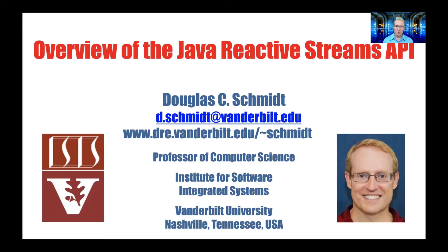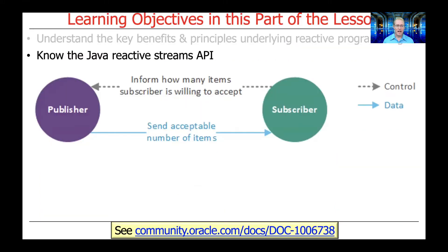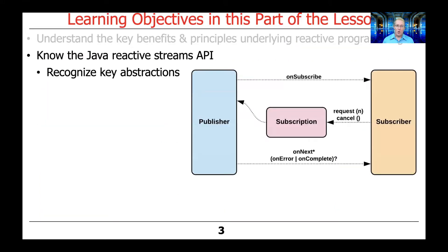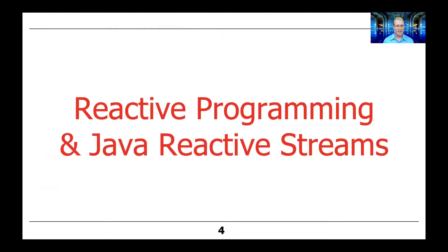Now that you know a bit more about the Reactive Programming Principles, let's talk about the Java Reactive Streams API. We'll focus on the key abstractions that are part of this API, including publishers, subscribers, and subscriptions.